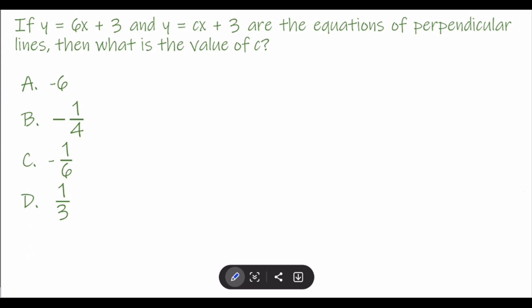If y = 6x + 3 and y = cx + 3 are the equations of perpendicular lines, then what is the value of c? Here are the options: A is -6, B is -1/4, C is -1/6, and D is 1/3.